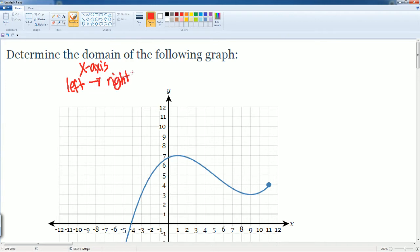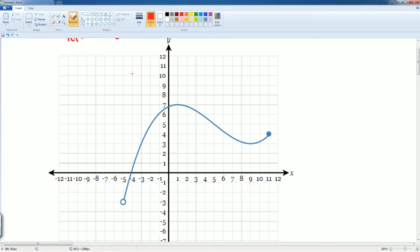So from here, let's just take a look. We are starting from our left, which is right here. And we are looking at the x-axis. So this value is negative 5.